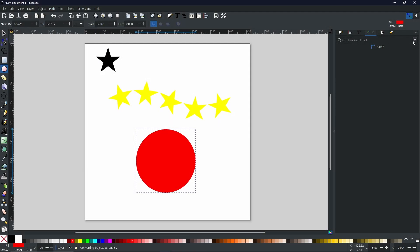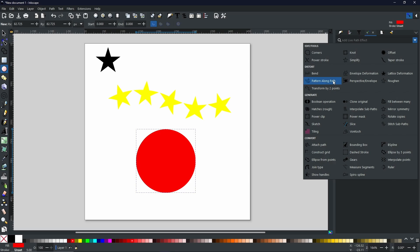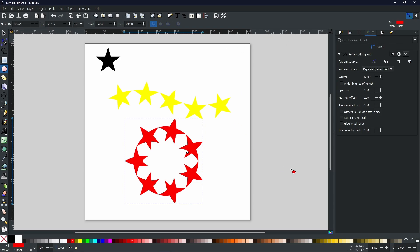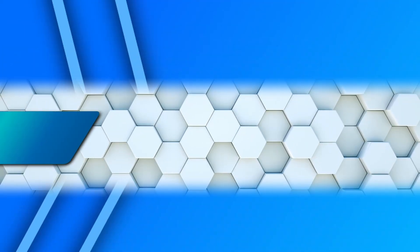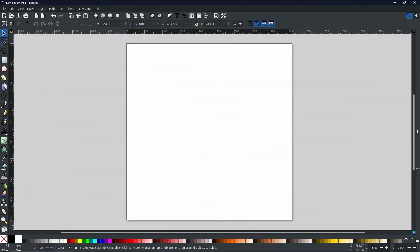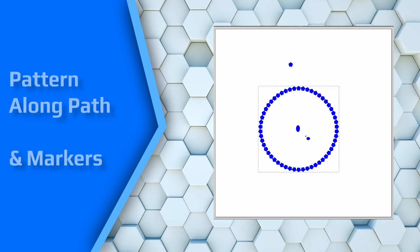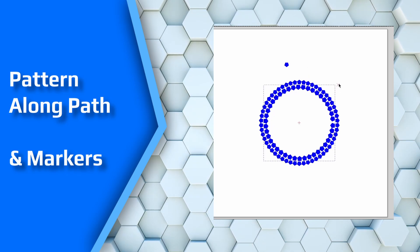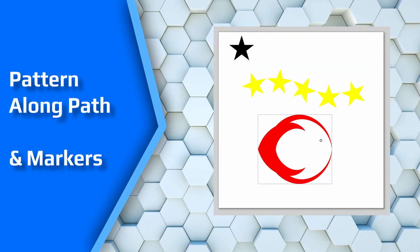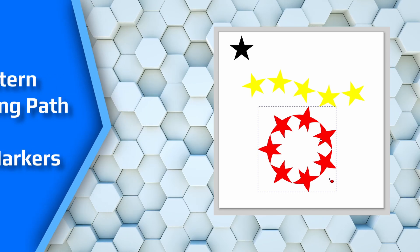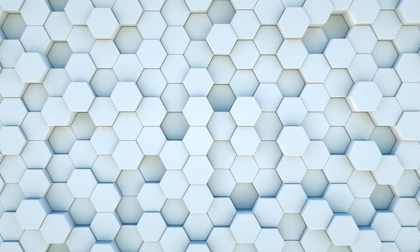Did you know in Inkscape you can put patterns or objects along a predetermined path? In today's video I'm going to show you how. Hello my friends, Rob here from Button Press Graphics, back with another tutorial video. Today I'm going to be showing you how you can make all of your objects sit along a predetermined path just like the ones you can see on screen right now. So without further ado, let's get started.